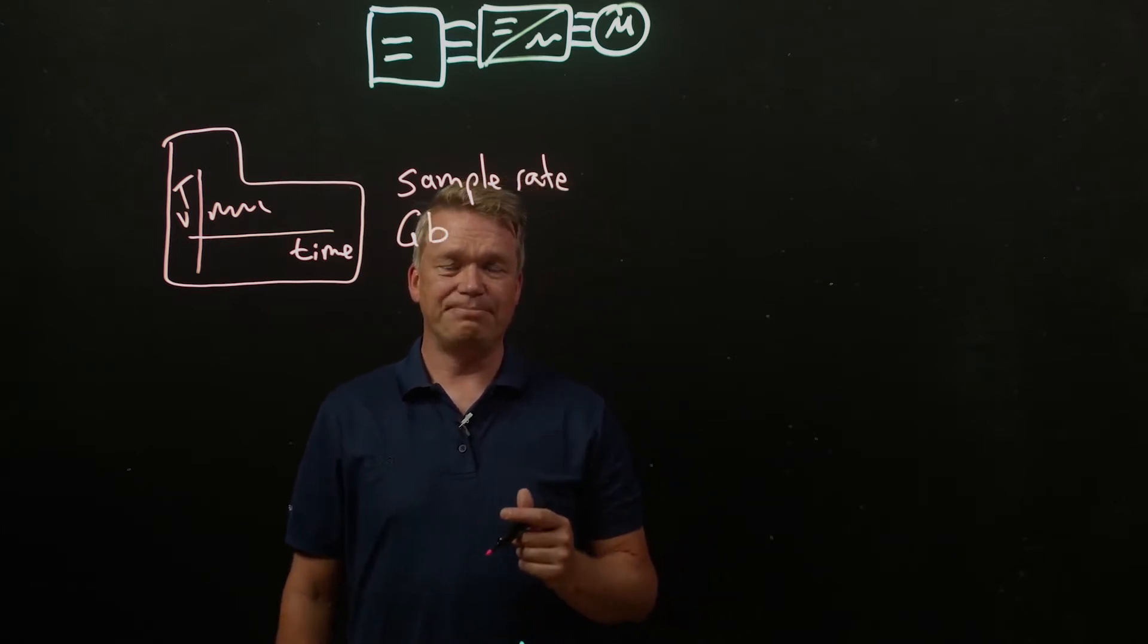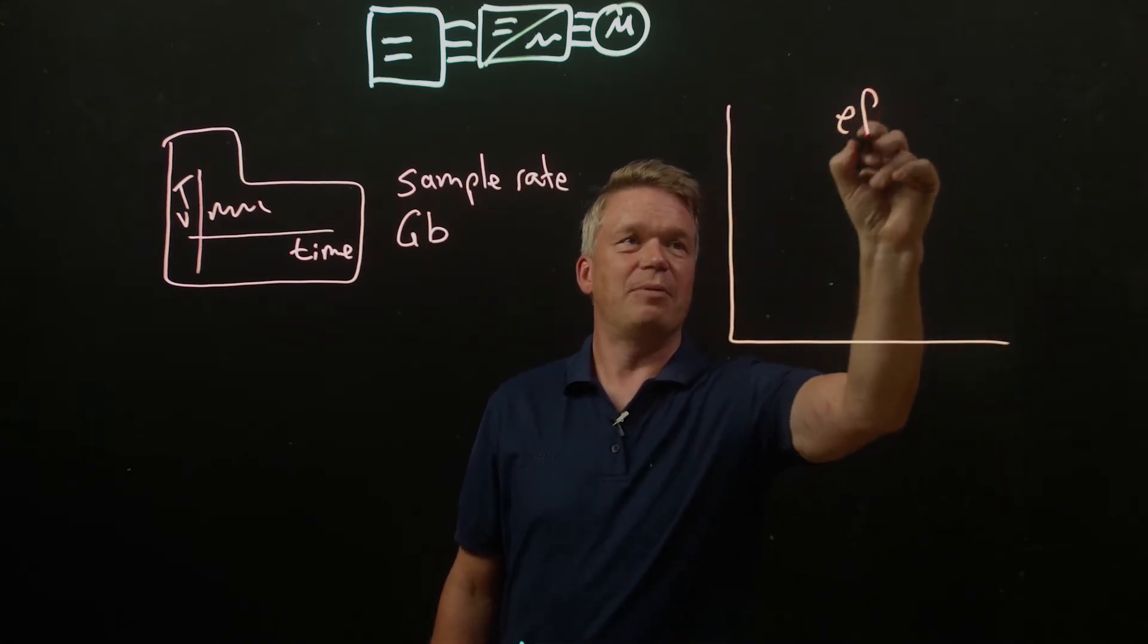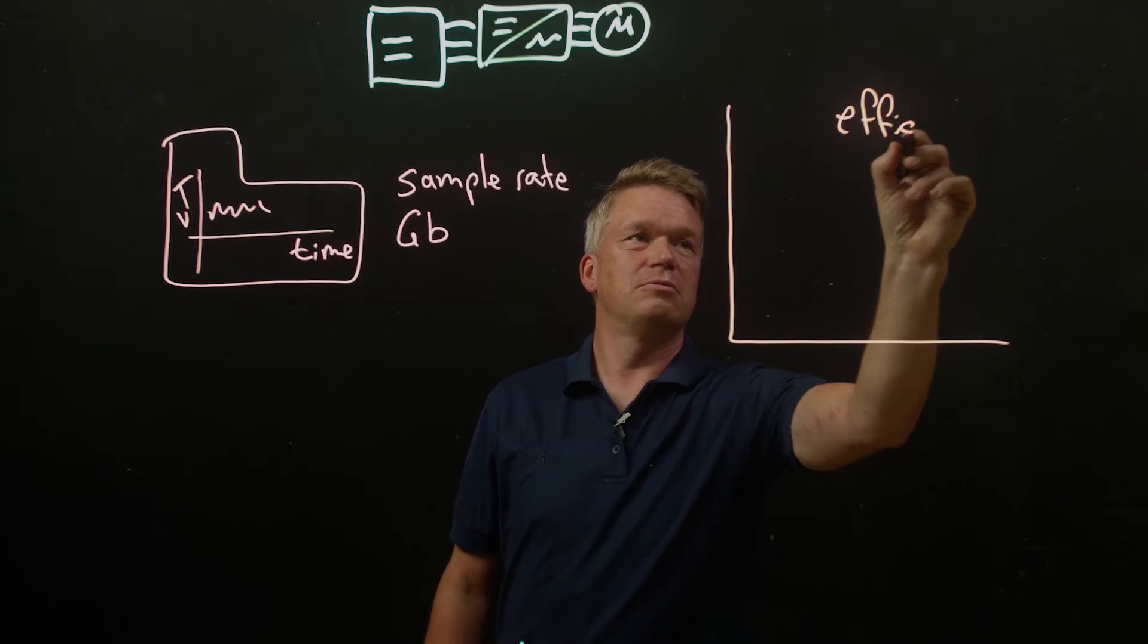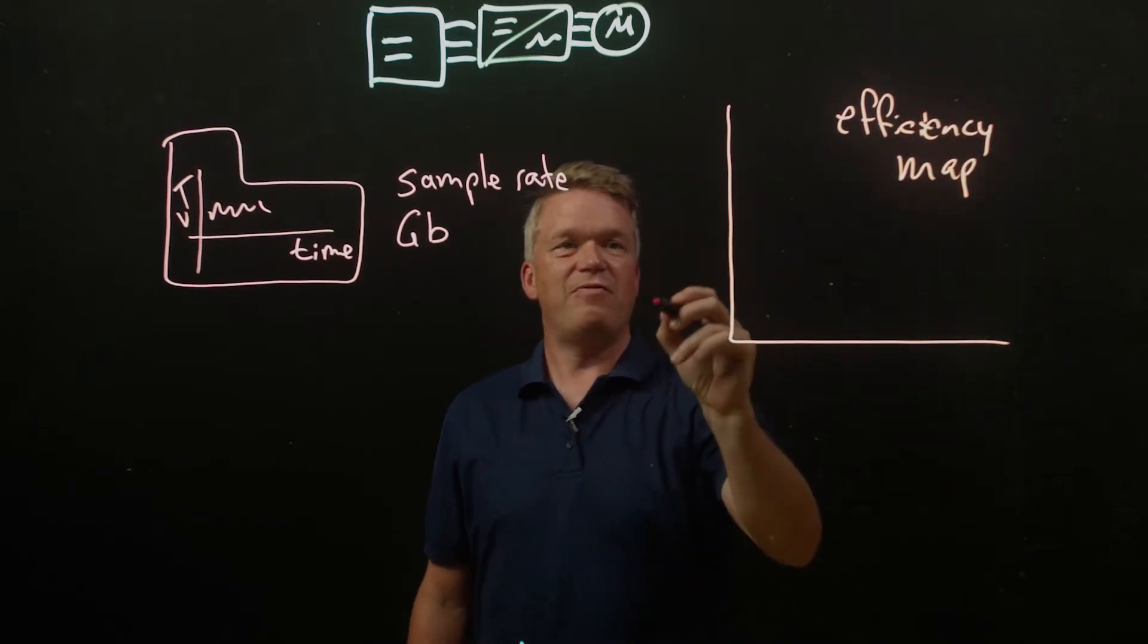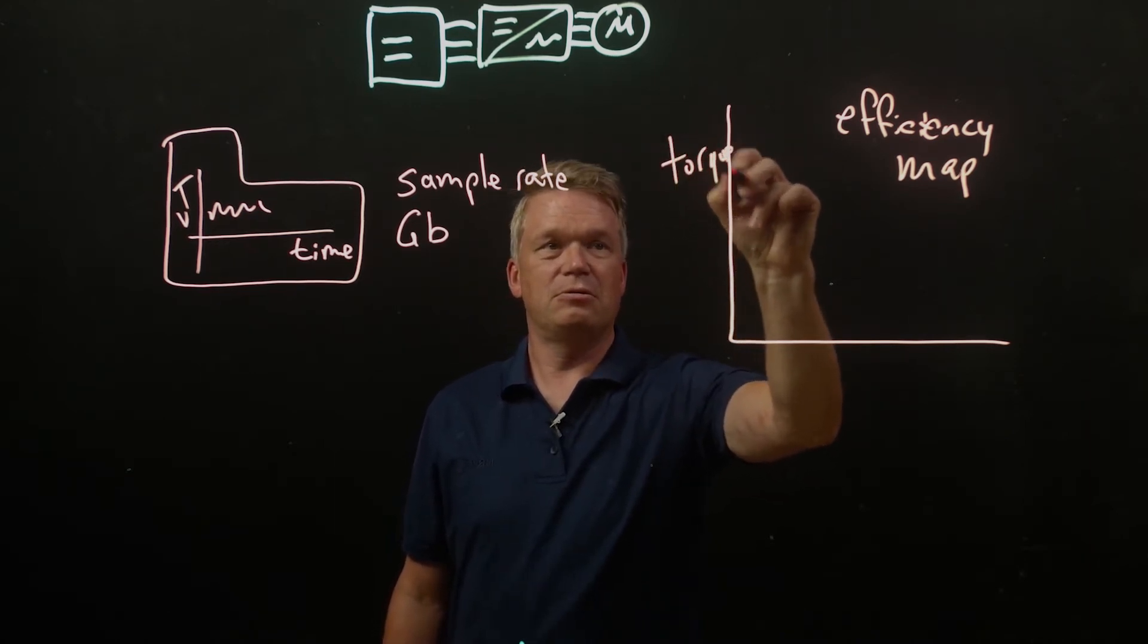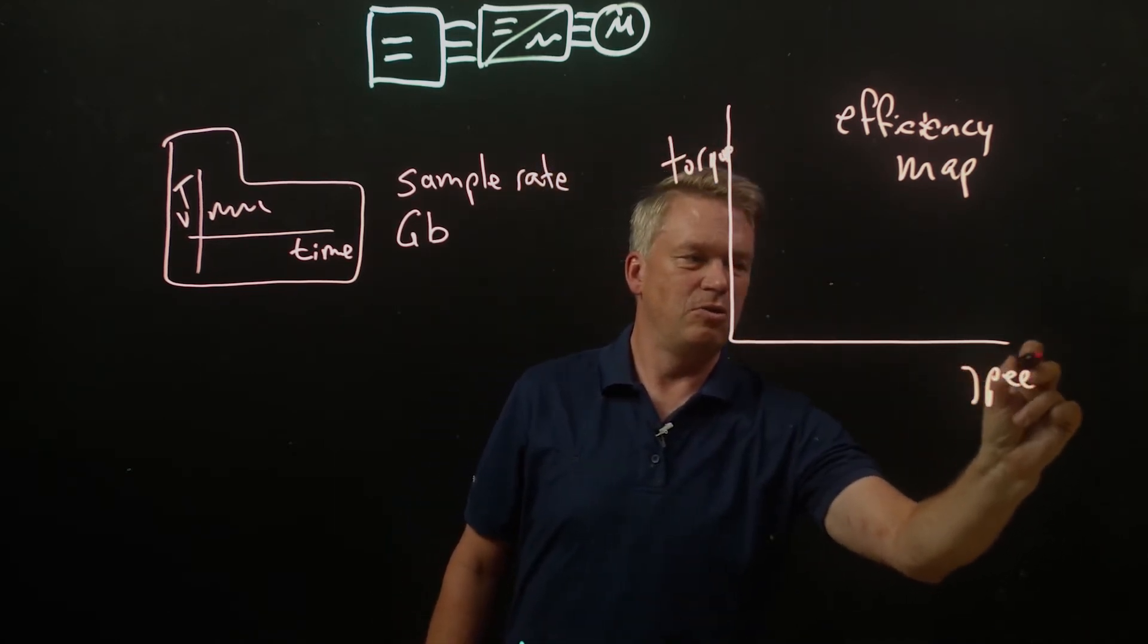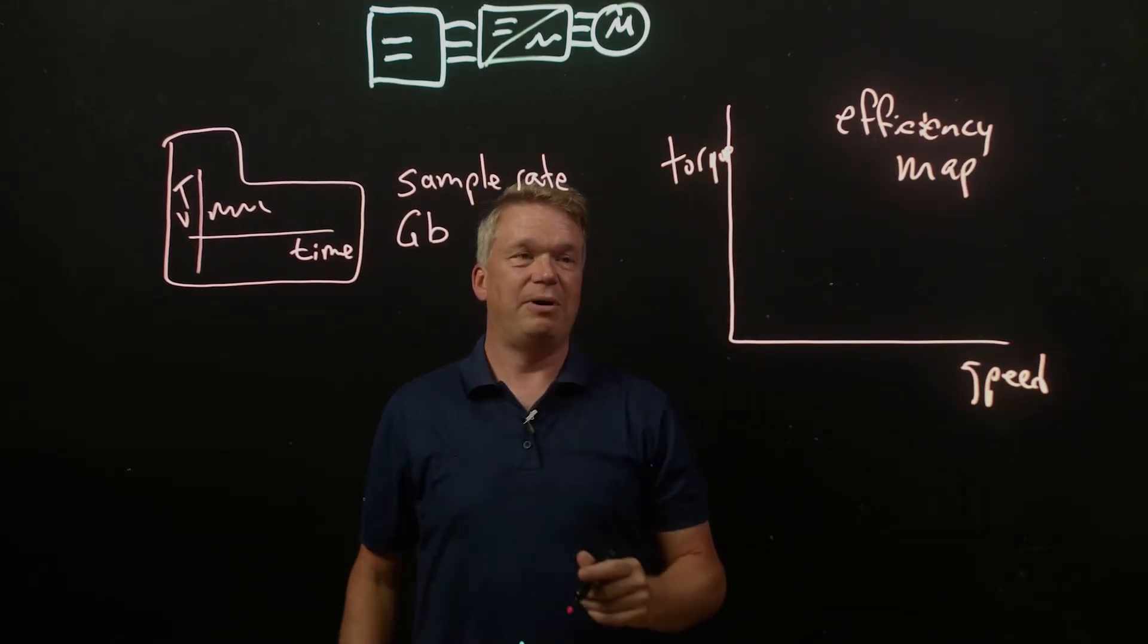Well one thing we want to look at is efficiency. So we're going to take a look at what we call an efficiency map. And for every combination of torque and speed, we're going to calculate what's the efficiency of that conversion from electrical to mechanical power.